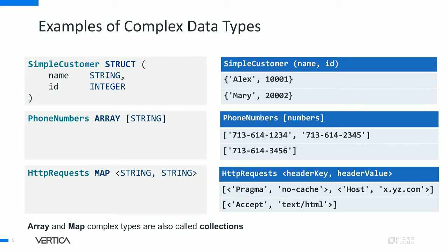The customer struct has two fields of type string and integer. So you have two rows: the first row has name Alex and ID 101, and the second row has name Mary with ID 2002. The second complex type is phone numbers, of type array where the element type is string. An array is nothing but a collection of elements — the elements can be a primitive type or another complex type. In this example, the collection is of type string. On the right, each row has a list or collection of phone numbers: the first row has two phone numbers and the second row has a single phone number in that array.